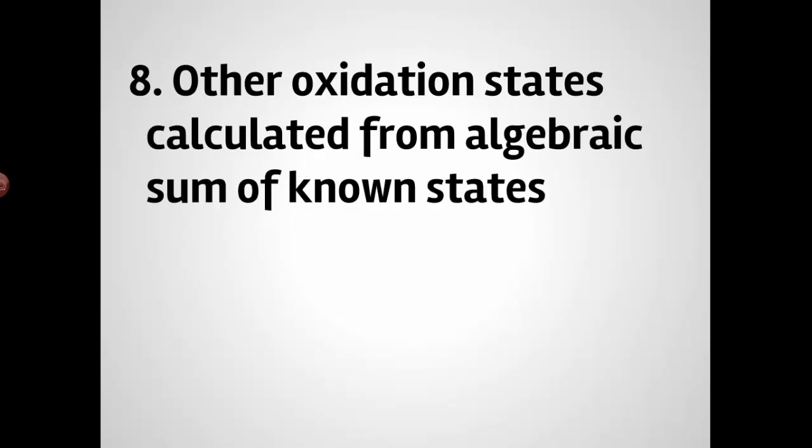The rest of anything that wasn't on that list, you can calculate from the algebraic sum of known states. So you figure out the ones you know, and then the sum of all the oxidation states in a molecule has to equal the charge on the molecule or ion.